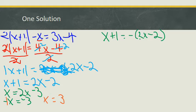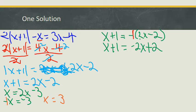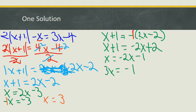Now I'm ready for the second side. I've got x plus 1 equals minus 2x minus 2. The first thing I'm going to do is distribute this minus — which is really a minus 1 — so I'm left with x plus 1 equals minus 2x plus 2. Now I'm going to subtract 1 from both sides: x equals minus 2x minus 1. Now I add 2x to both sides to get all my x's on the left: 3x equals minus 1. Dividing both sides, x equals minus 1/3.